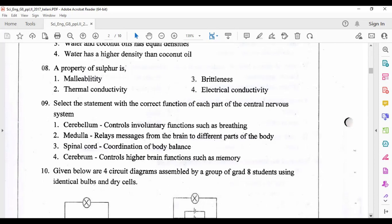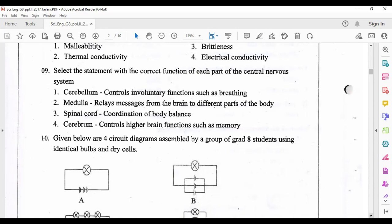Ninth question: select the statement with the correct function of each part of the central nervous system. Answer number four is correct: cerebrum controls higher brain functions such as memory. For cerebellum, correct function is regulation and coordination of body balance. For medulla, correct function is controls non-voluntary functions. For spinal cord, correct function is relays messages from the brain to different parts of the body.